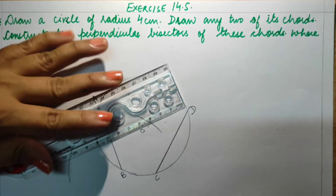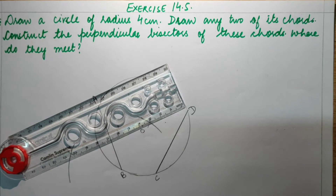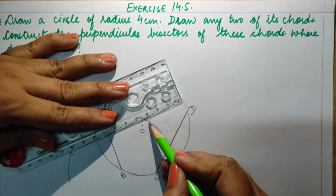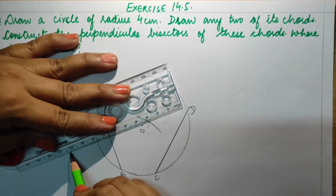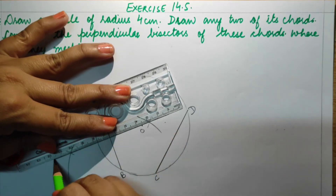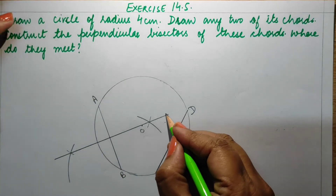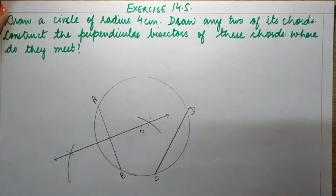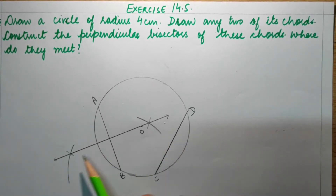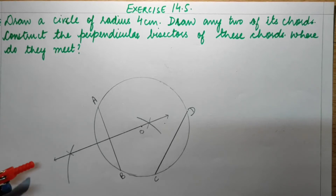Now let's draw the perpendicular bisector of line segment AB. We have done this before — the perpendicular bisector of any chord passes through the center of the circle. You can check that the perpendicular bisector of chord AB is also passing through the center of the circle.